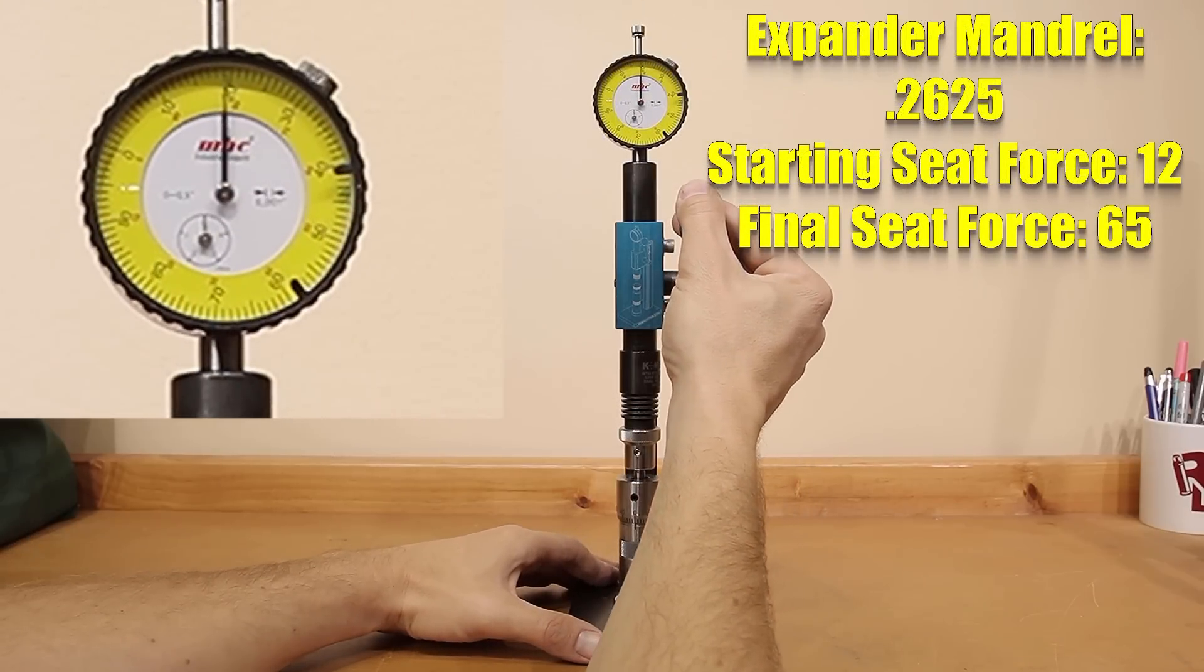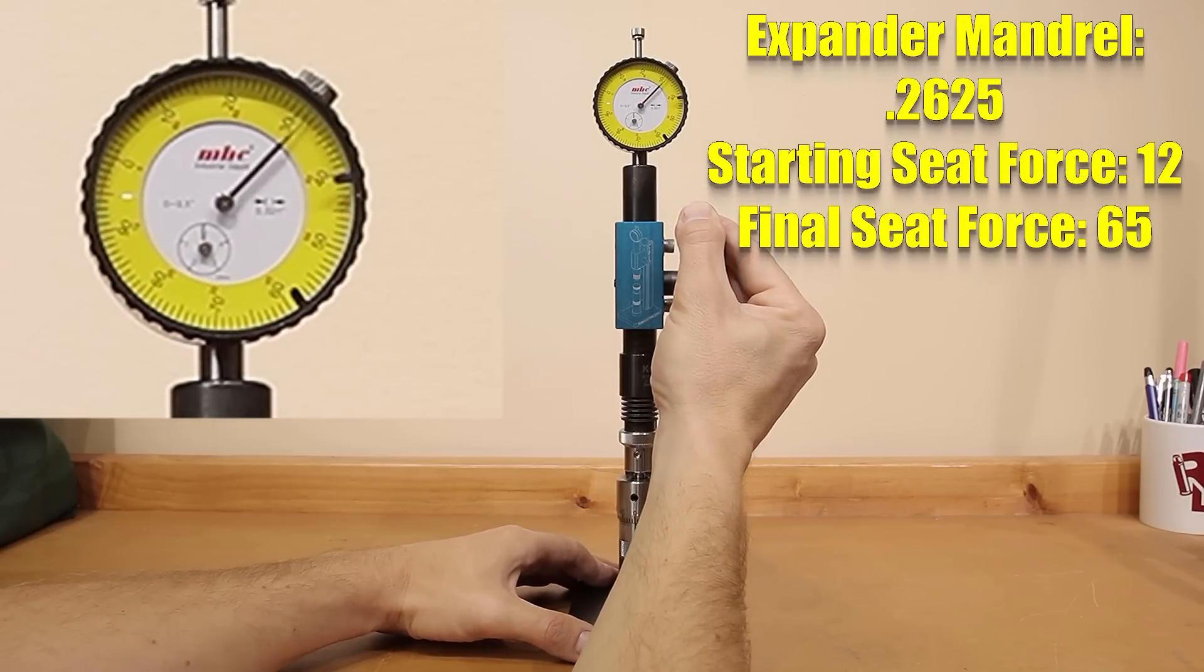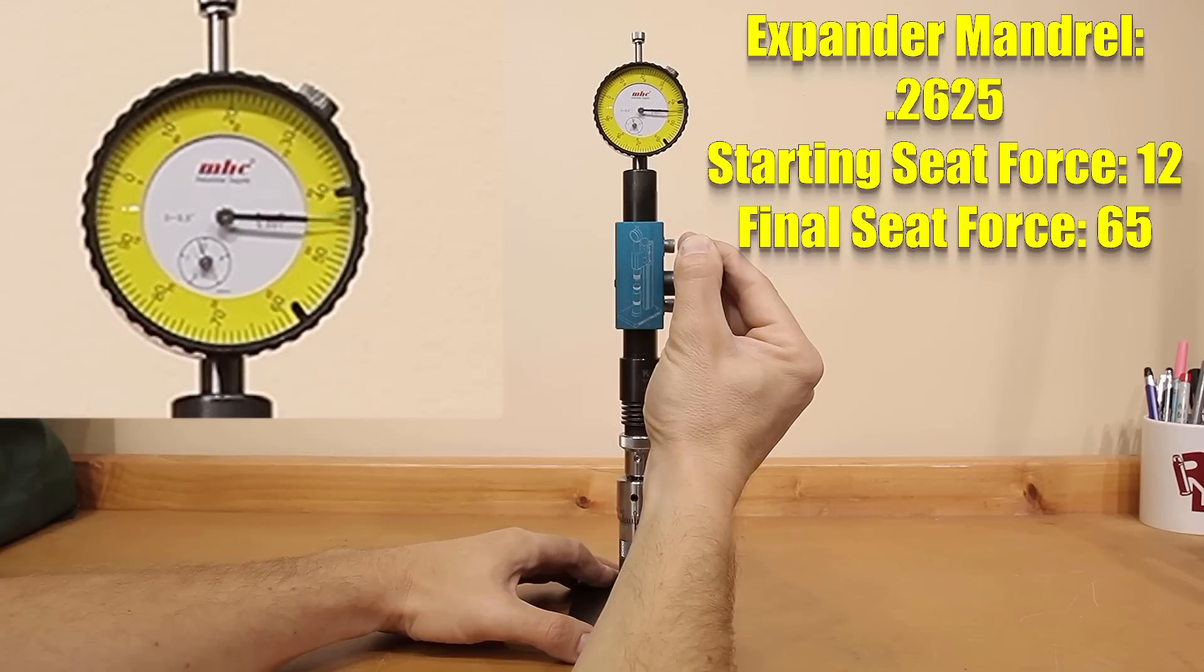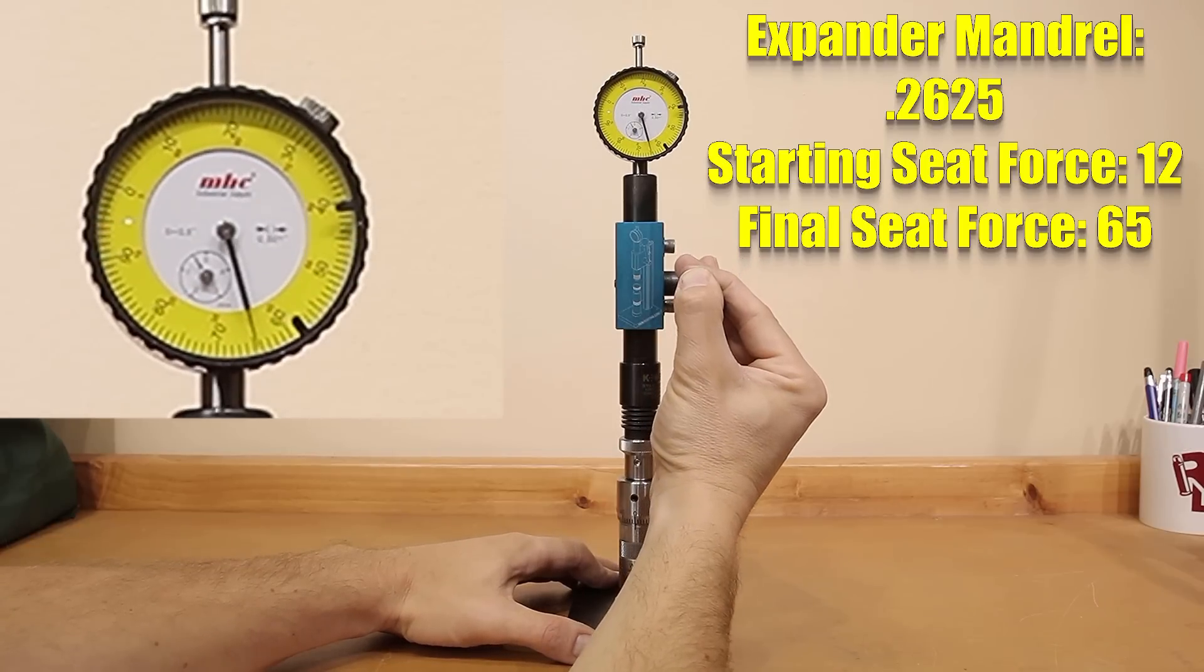Moving on to 262 and a half, our starting force dropped to 12 pounds, and our final seating force dropped only slightly to 65 pounds.